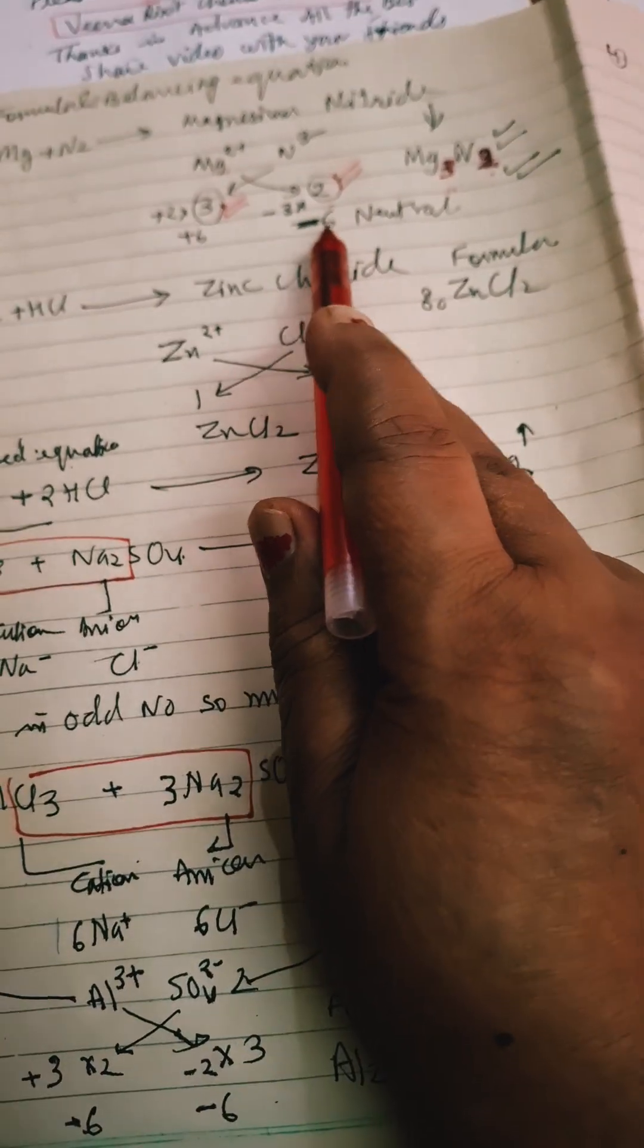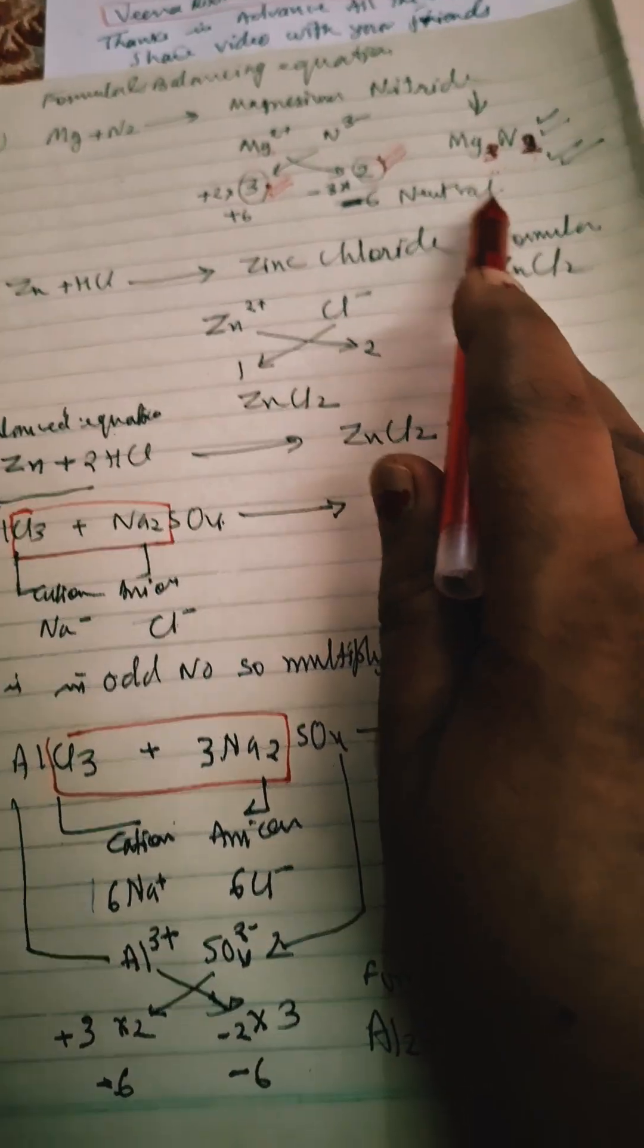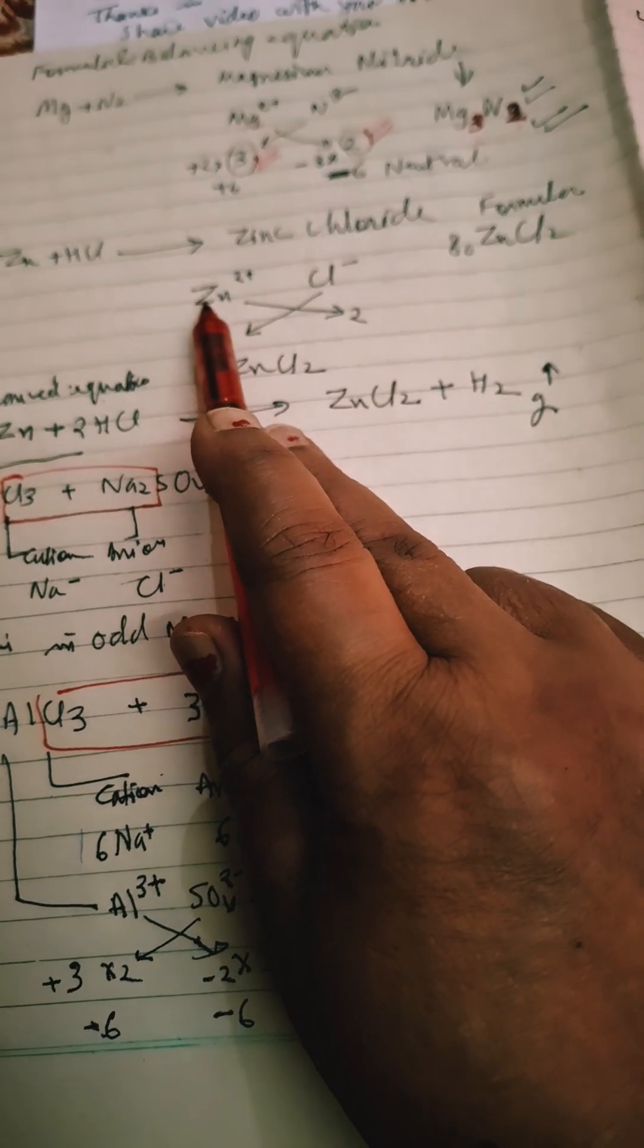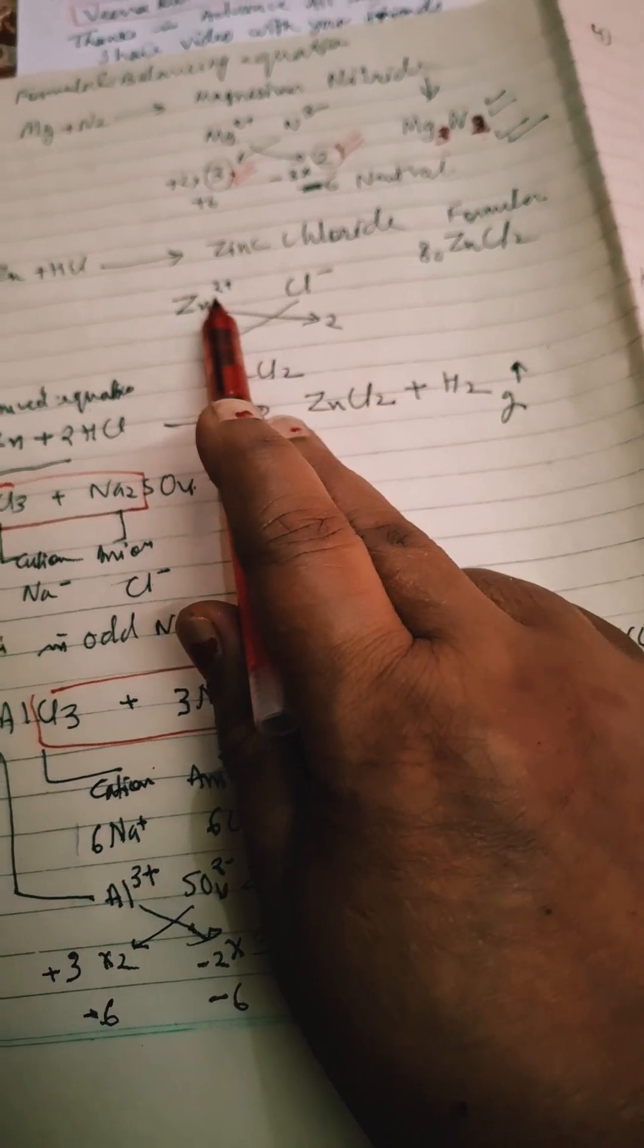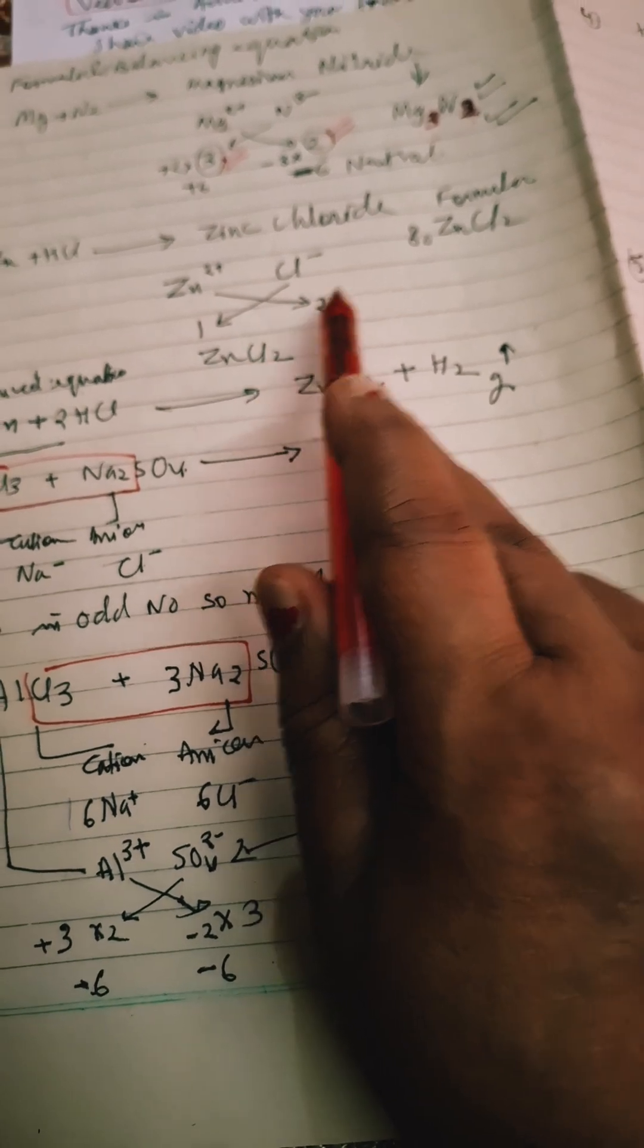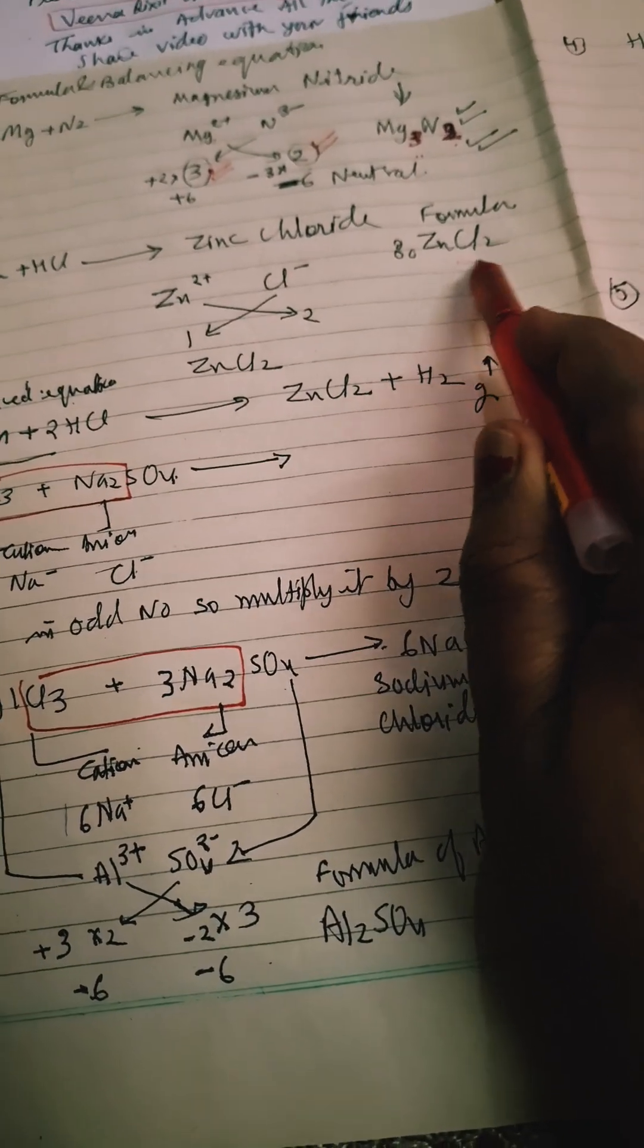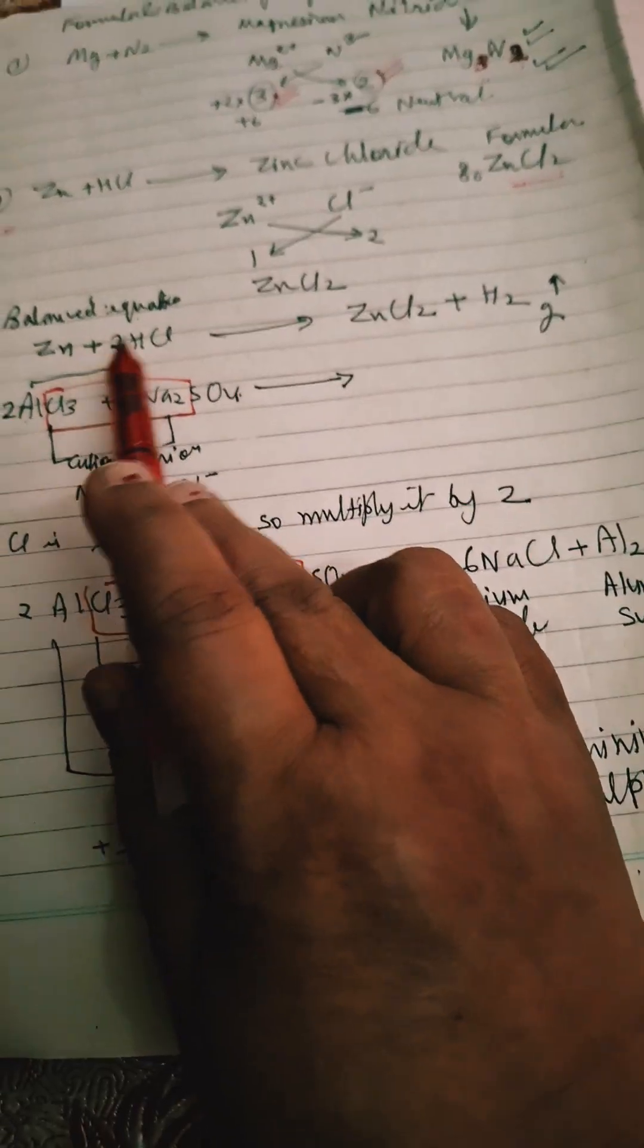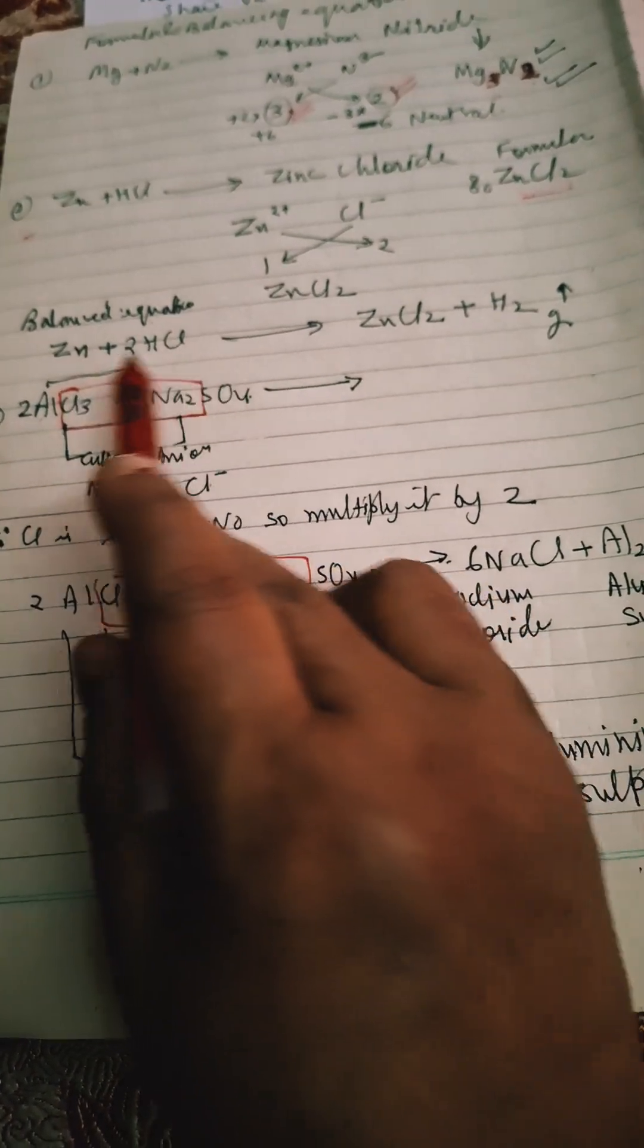Zn plus HCl: zinc chloride, 2 charge, so we will put subscript 2 just after Cl. So it will be ZnCl₂.